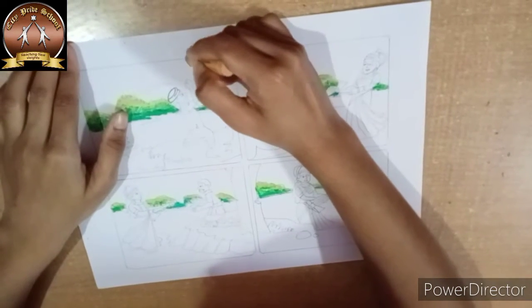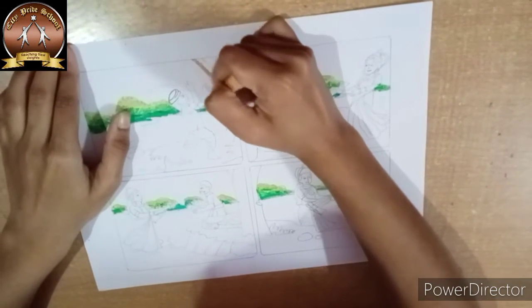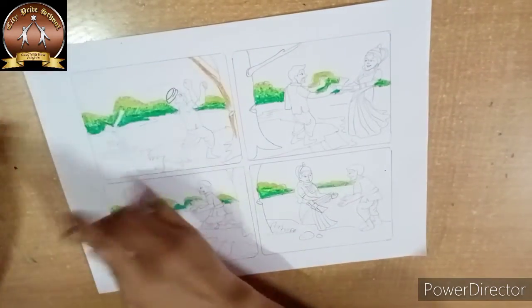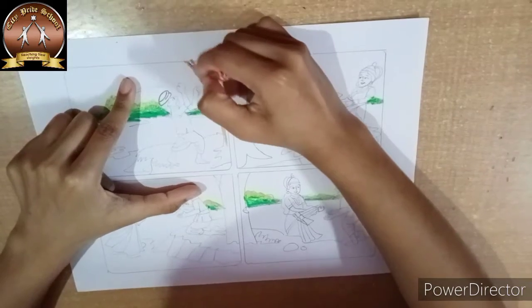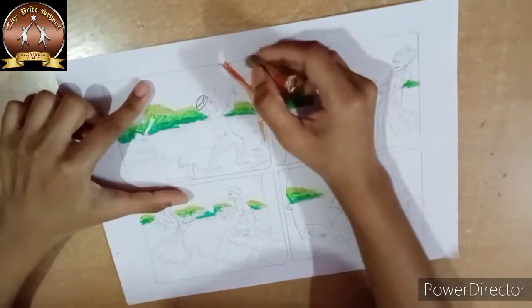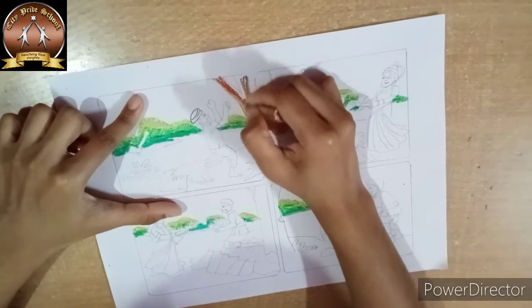Now we will color the trunk of the tree. So this is the light tone, then middle tone, and dark tone of the brown.